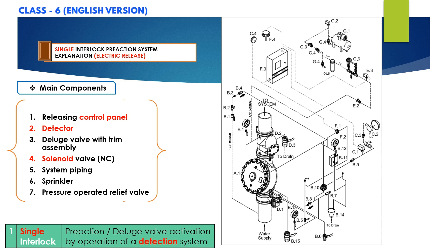Let's discuss the system operation in detail using a schematic diagram. In the set condition, the system water supply pressure enters the priming chamber of the deluge valve through a 1/4-inch line, which includes a normally open priming valve, strainer, restricted orifice, and a check valve. This line is also connected to the normally closed solenoid valve and to the emergency release button. Water supply pressure is trapped in the priming chamber by the check valve and normally closed solenoid valve, and the pressure in the priming chamber holds the deluge valve clapper closed, keeping the outlet chamber and system pipe dry.